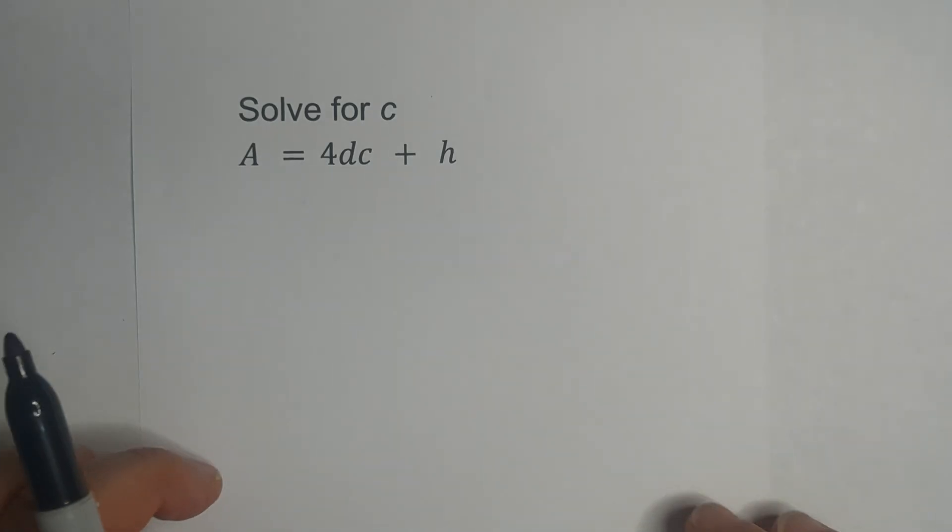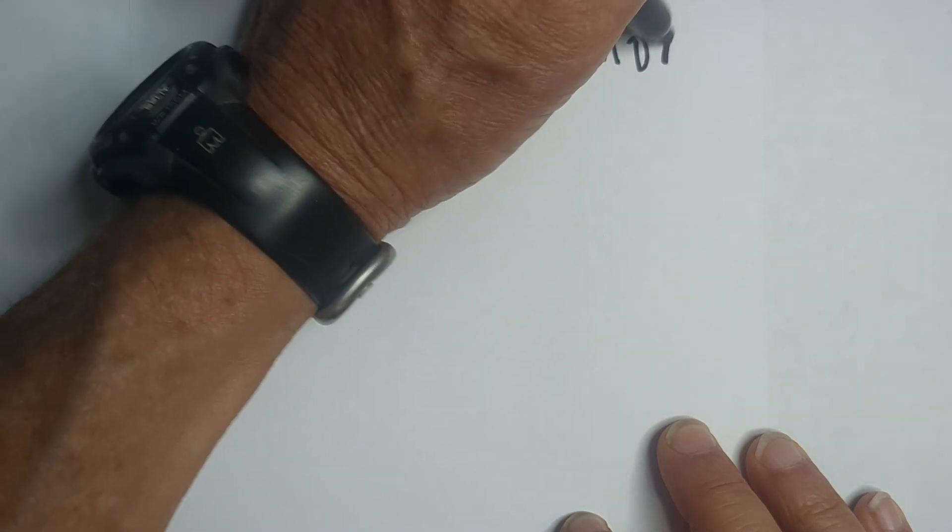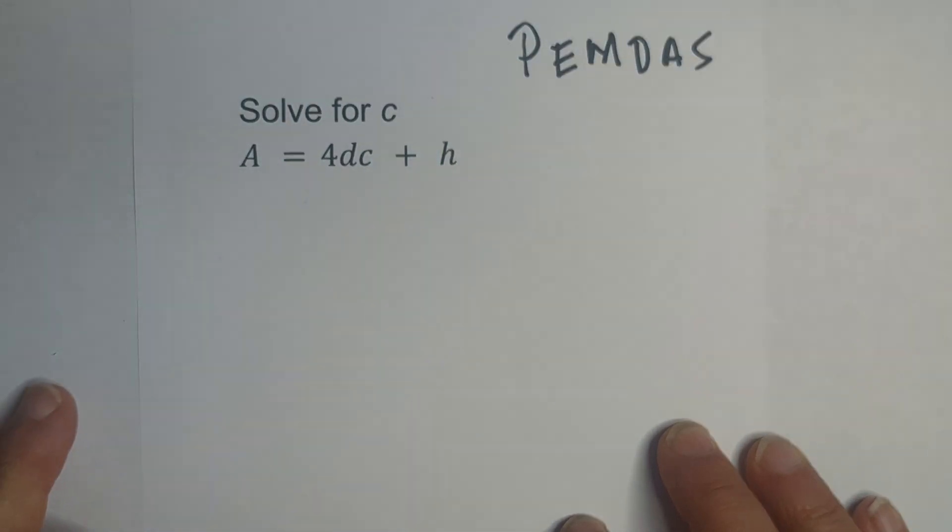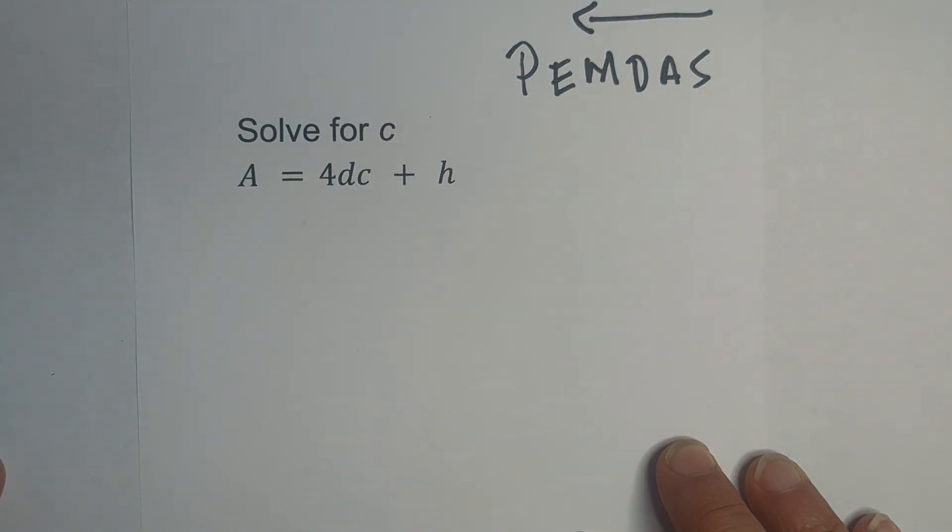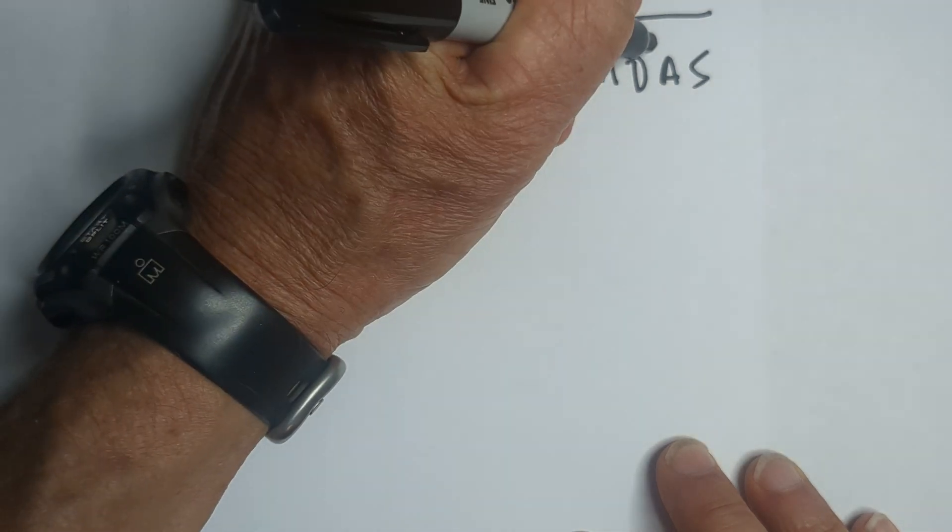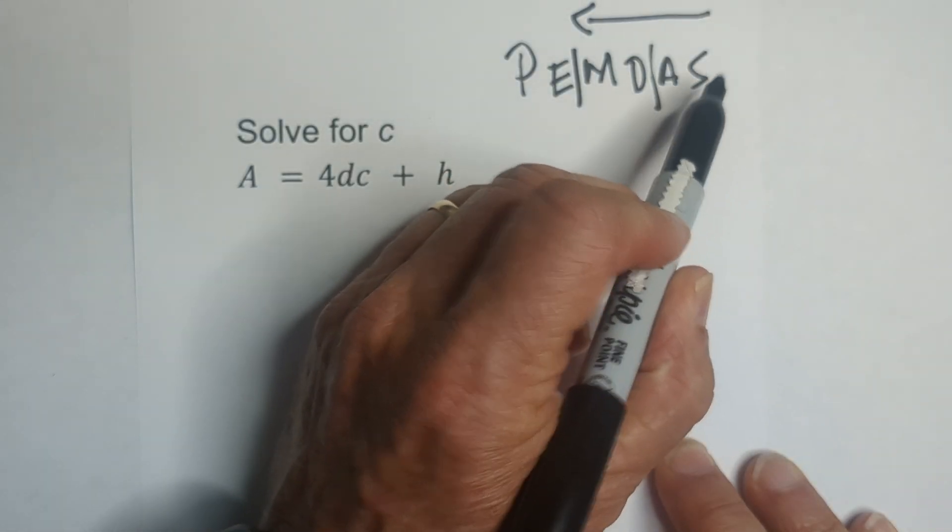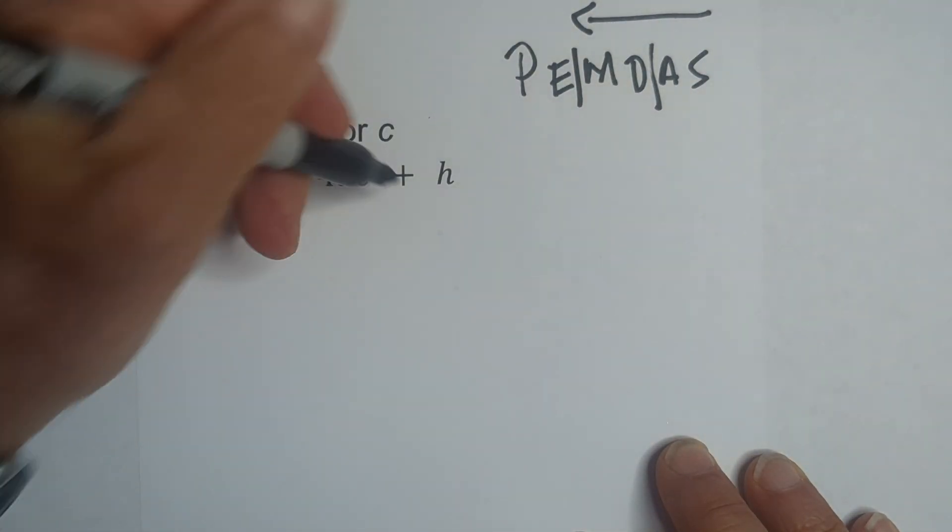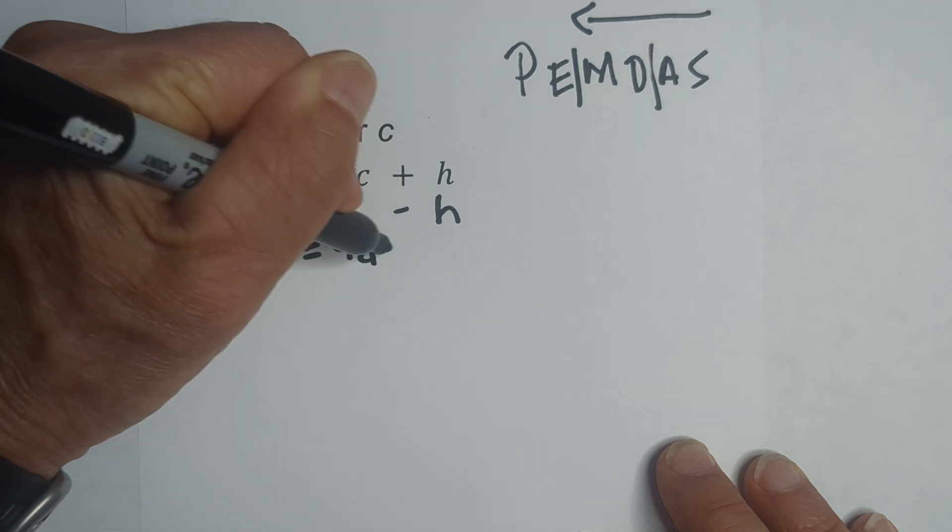In this problem, you need to follow the correct order of operations. You may be familiar with PEMDAS. Well, PEMDAS is used whenever you're simplifying, but whenever you're solving, you go in this direction. So what we need to do, since we are solving, we need to start with addition, subtraction, multiplication, division. We're going to start with addition, subtraction. So we're going to start with the H, and we're going to subtract H from both sides. So we have A minus H equals 4 times DC.